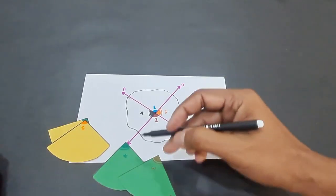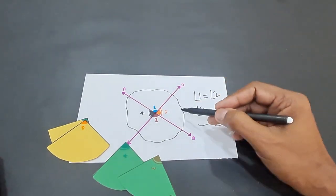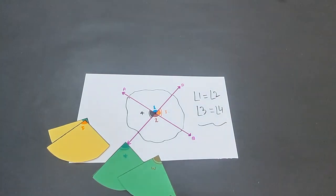Whenever two lines intersect, each pair of vertically opposite angles will always be equal. That completes our activity on vertically opposite angles.